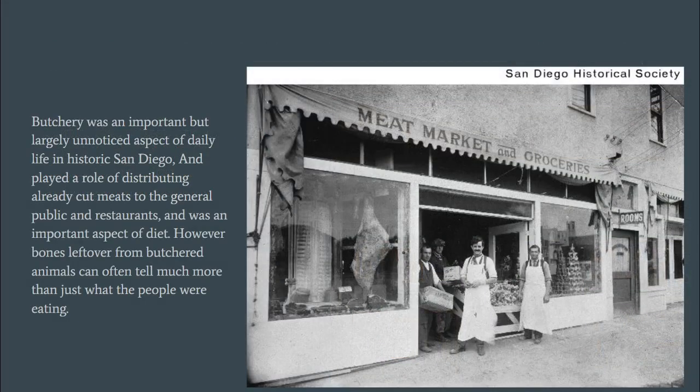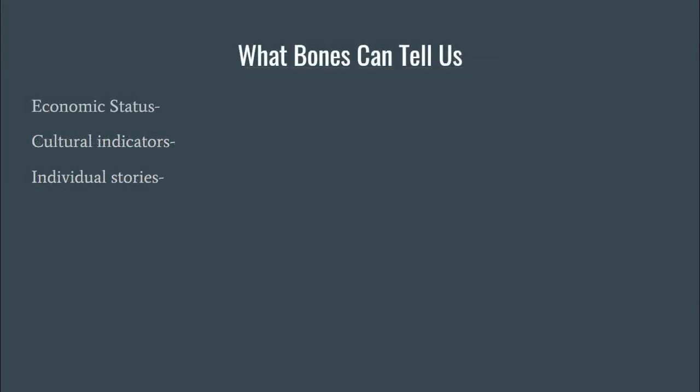Butchery was an important but largely unnoticed aspect of daily life in historic San Diego and played a role in distributing already cut meats to the general public in restaurants. However, bones left over from butchered animals can often tell much more than just what the people were eating. Through different butchery techniques, cuts of meat, and context they were found in, we can determine a lot about food choices of the past. The three biggest things that bones can tell us about historical butchery in San Diego are economic status, cultural indicators, and individual stories to better paint a picture of the past.